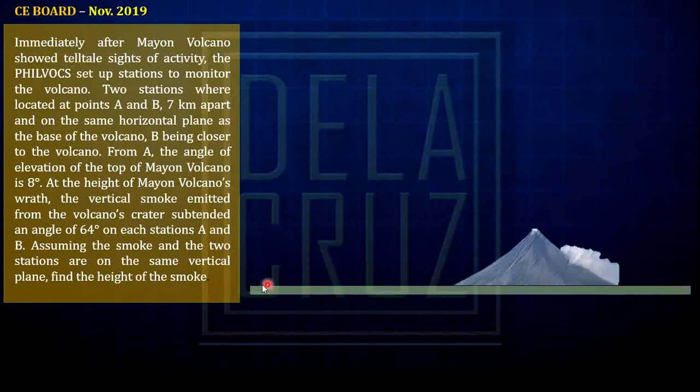They are in a line at the base of the volcano, and B is being closer to the volcano. So if we were to draw that, this is the base of the volcano. Points A and B - let's assume this is A and this is B. This is not a scaled drawing. B can be anywhere here, so I just put it here. And they are 7 kilometers apart. B is being closer from the volcano. From A, the angle of elevation to the top of the Mayon volcano is 8 degrees.